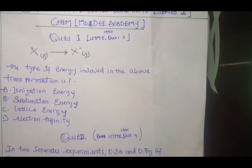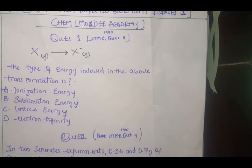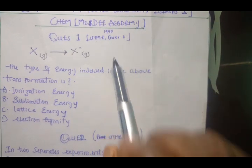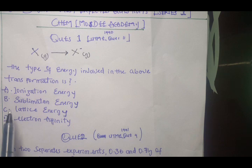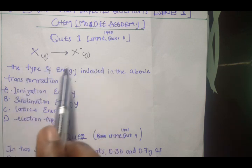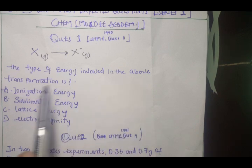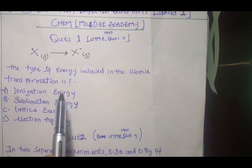As promised, I will be quick to explain some certain principles on why we are picking some answers. The first one we have X as gas and it's giving us X here also in gas. So we have a form of what? The question is: the type of energy involved in the above transformation is dash.